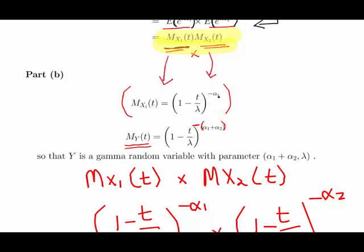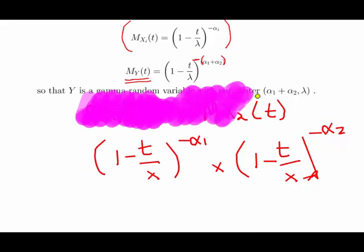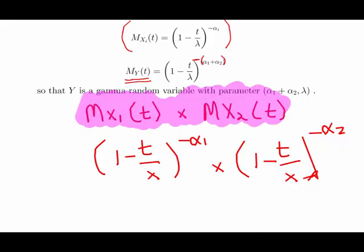So it is minus alpha 1 in one case, and then minus alpha 2 in the other. So essentially what we have to do is multiply these two expressions out. Alpha 1 and alpha 2 is there in both cases, but lambda is common to both. So essentially what we have here is 1 minus t over lambda to the power of minus alpha 1, that's M of X1 of t, and then 1 minus t over lambda to the power of minus alpha 2.